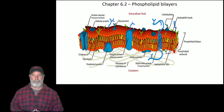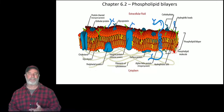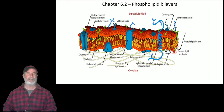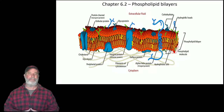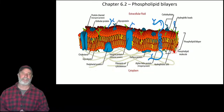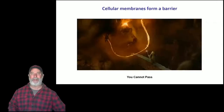Membranes are about 50% proteins, so there are a lot of proteins embedded in these membranes that perform many functions, including transport — whether it's facilitated diffusion or active transport. This is incredibly important for cells to maintain homeostasis and react to their environment. Because they have a hydrophobic interior, membranes have something called selective permeability: only certain things are allowed to pass through.